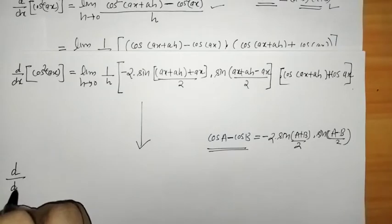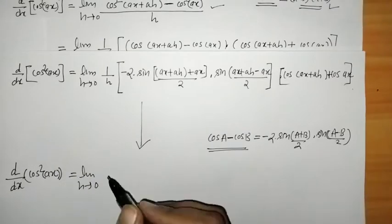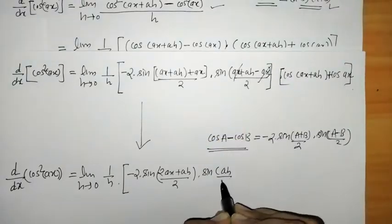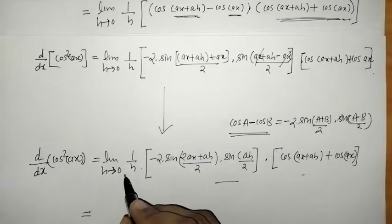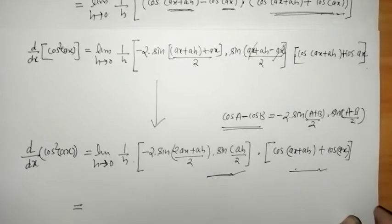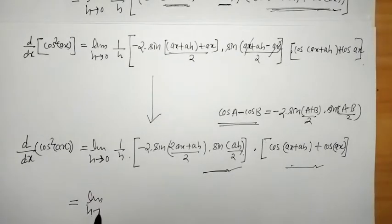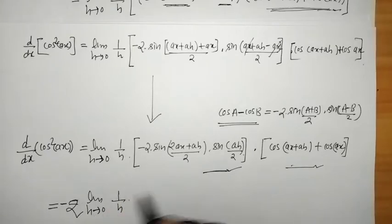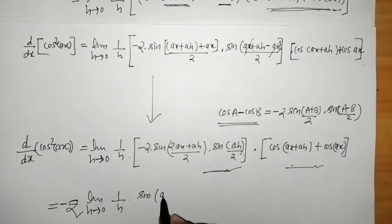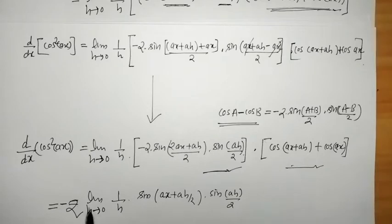Next we can simplify. By using the algebra of limits, we can apply the limit separately to each factor. Here we have the limit h tends to 0. We can write 1 upon h outside, and we have minus 2 into sin(ax + ah/2) into sin(ah/2), into the limit of cos(ax+ah) plus cos(ax).